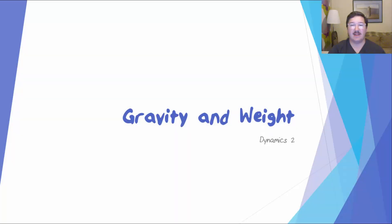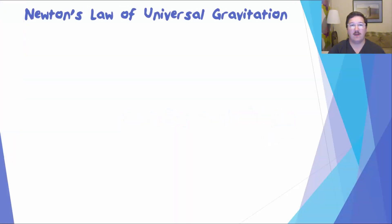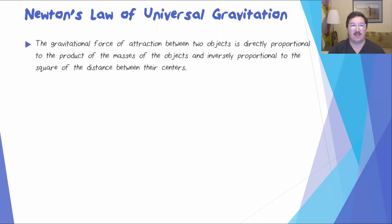The second lesson in the Dynamics unit is about gravity and weight. Newton's Law of Universal Gravitation tells us that the gravitational force of attraction between two objects is directly proportional to the product of the masses of the objects and inversely proportional to the square of the distance between their centers.